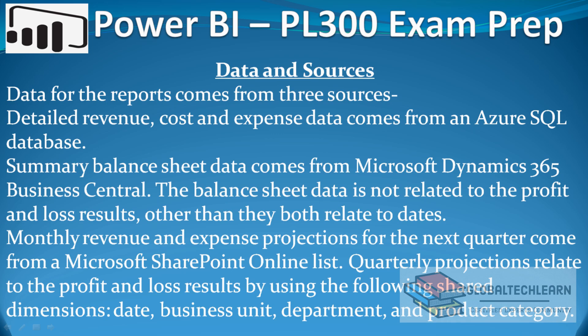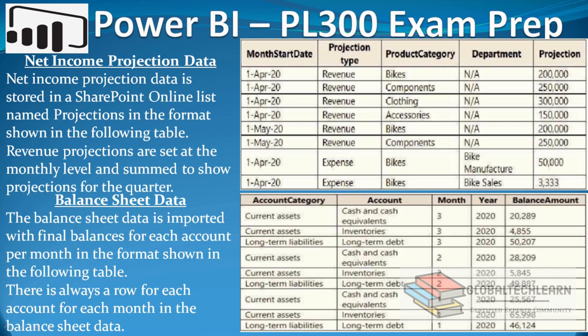Quarterly projections relate to the profit and loss results by using the following shared dimensions: Date, Business Unit, Department, and Product Category. Then under datasets, we have the net income projection data.